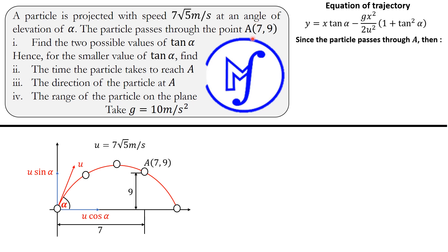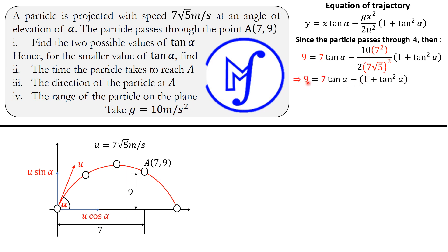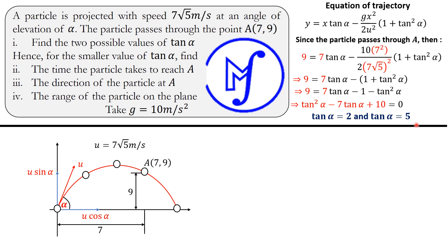We plug into the formula: 9 = 7·tan α − (10 × 7²)/(2 × (7√5)²) · (1 + tan²α). Since 7√5 squared is 7² × 5, and 5 × 2 = 10, the numerator and denominator cancel, giving: 9 = 7·tan α − (1 + tan²α). Rearranging, we get tan²α − 7·tan α + 10 = 0. Factorizing, the two possible values of tan alpha are tan α = 2 and tan α = 5.